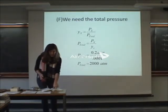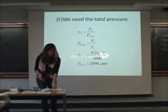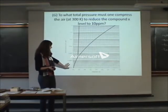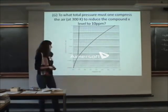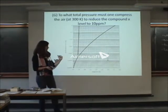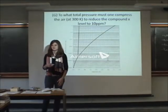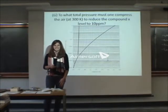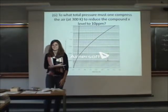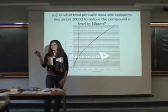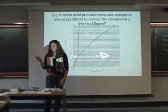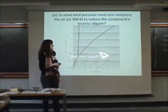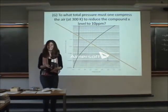Our last part is G, which is, to what pressure must one compress the air to reduce the compound X level to 10 parts per million? So my thought was, I have this. I know I wanted to get it down to this, you know, parts per million. And so I'm just going to drop it down. There we're at. Just divide it out. Everyone good with this? Aaron says no. Why is this wrong? Because all you've done is reduced the pressure. You haven't actually removed any of the X. Okay, so you're right. That's wrong.